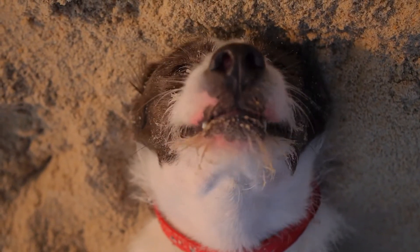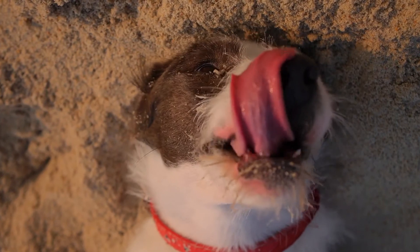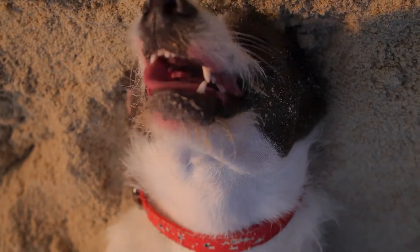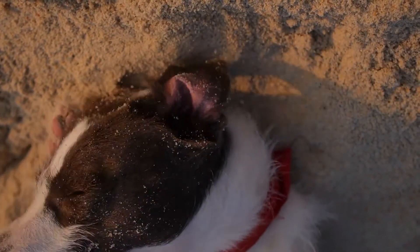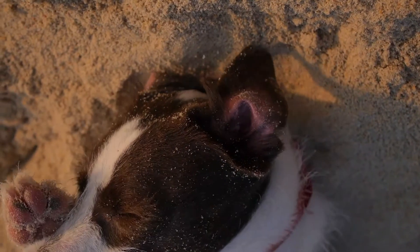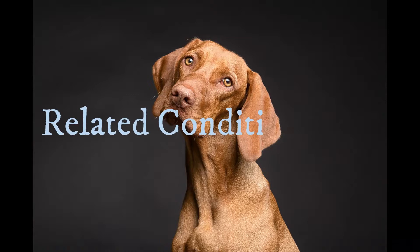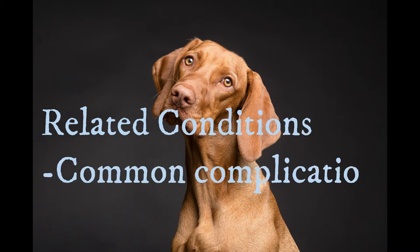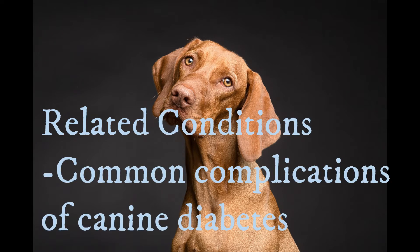The primary cause of canine diabetes is largely unknown, but experts suggest that genetics may play a role. Dogs with diabetes can develop complications subsequent to becoming diabetic.